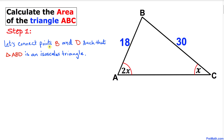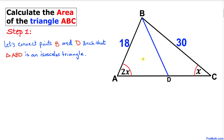Our very first step: let's connect point B and point D somewhere on line segment AC such that triangle ABD is an isosceles triangle. Here's our nicer-looking diagram.